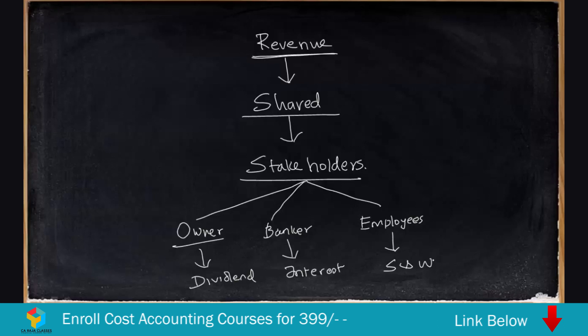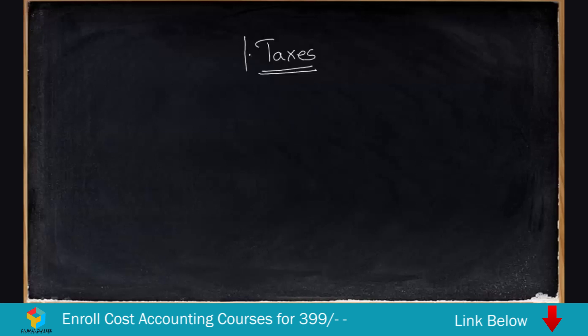When everyone can take their share, why not the government? The government provides all the infrastructure and facilities, creates the environment for operation, and provides all its approvals. So the government can also participate in and share the revenue. How does the government share the revenue? The government shares the revenue in the form of taxes. So when you earn revenue and share it with many, you are also supposed to share it with the government.